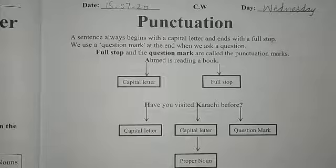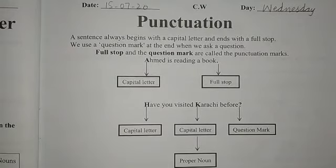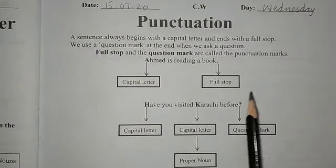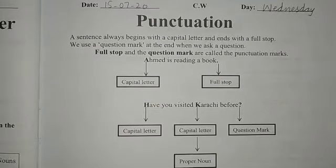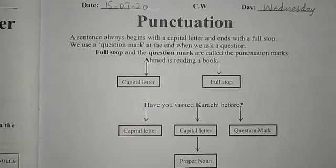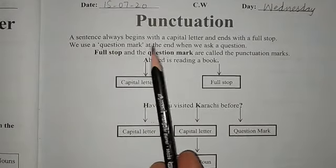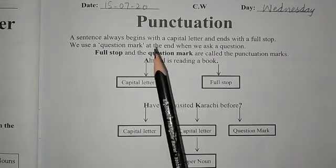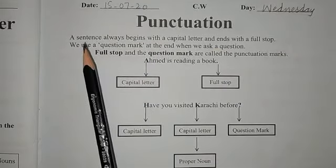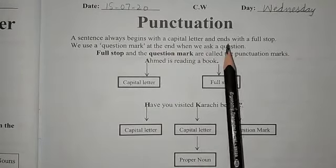Our topic is punctuation. Open up your workbook, page number 43. Mention date and day on the top of the page. Punctuation is a system of marks used in sentences. You may have seen different marks when you read a text — they are called punctuation. A sentence always begins with a capital letter and ends with a full stop.